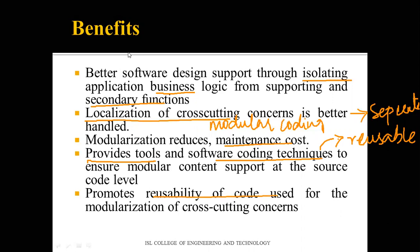It also promotes reusability of code used for modularization of the cross-cutting concept. In summary, the three specialized process models are: component-based development — focusing on reusing ready-to-use components; the formal methods model — using mathematical formulas for verification; and the aspect-oriented development model — a technique for separating components with their features using different tools. This concludes the class.